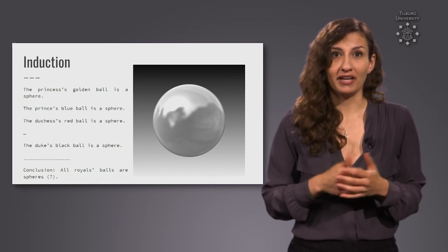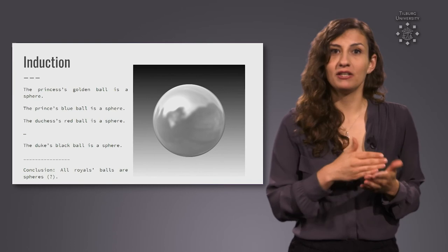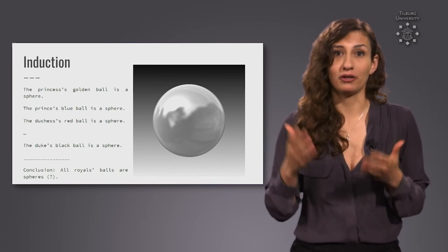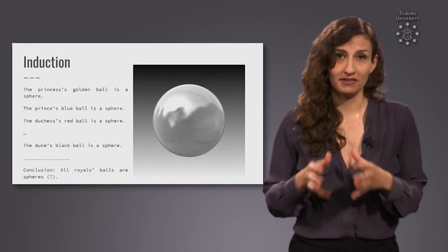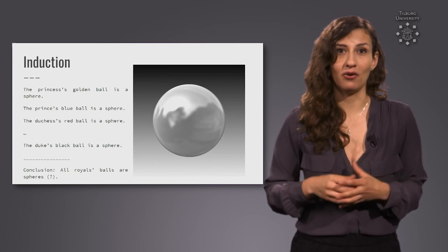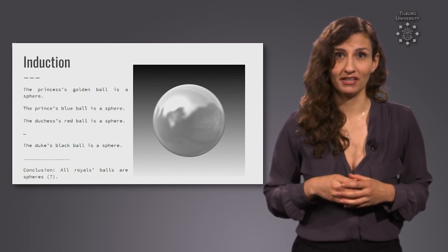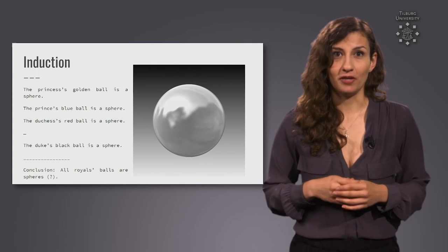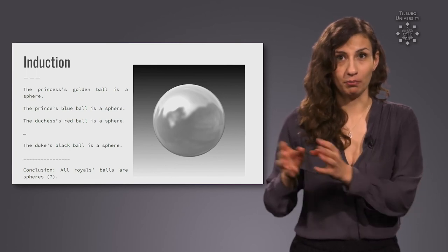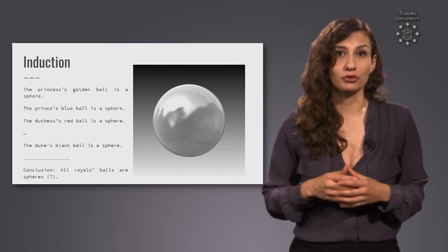The only way this statement would be true is if we indeed observed every single ball belonging to a royal and established that these balls were indeed all spheres. A single empirical observation of a non-spherical royal ball would render our conclusion false.